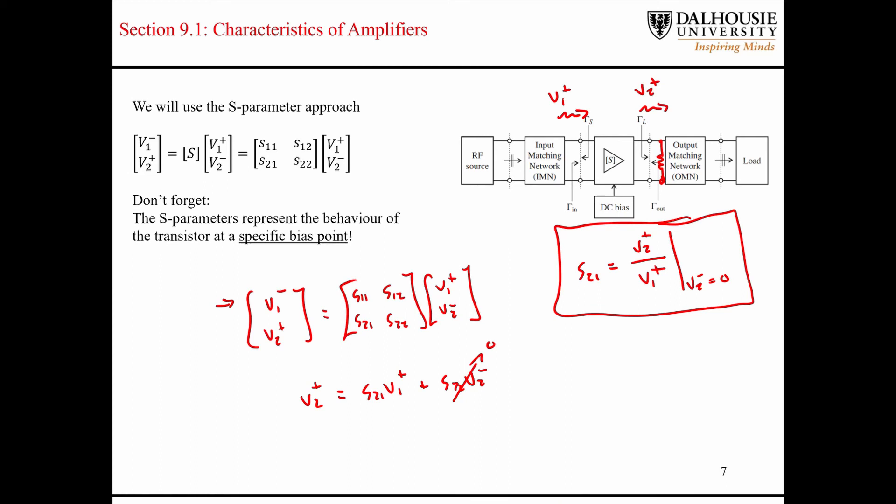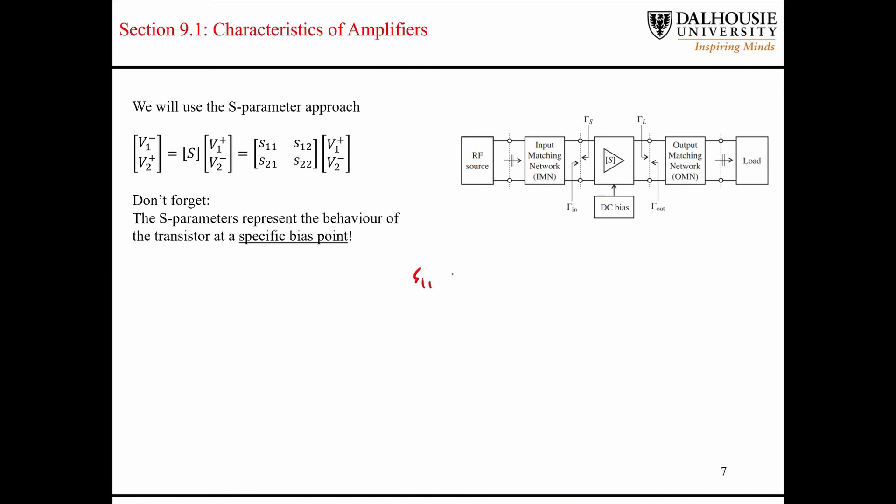So from now on out, basically, I'll just do one more quick little summary here. So let me just kind of summarize things. So S11 is kind of like the input reflection coefficient. S22 is kind of like the output reflection coefficient. S21 is related to the gain, like the forward gain.